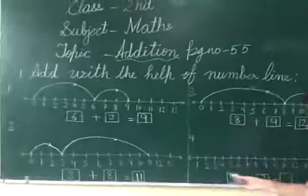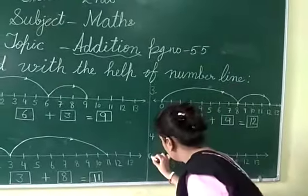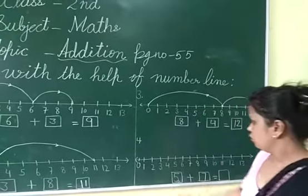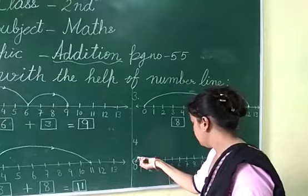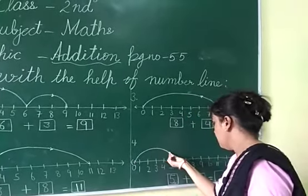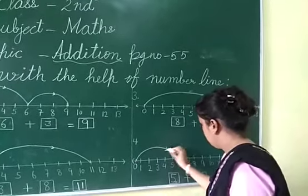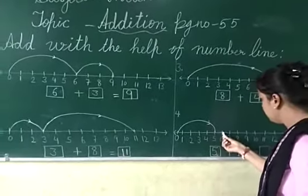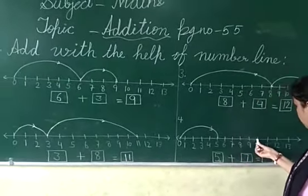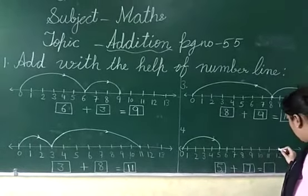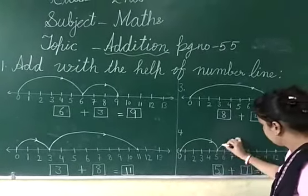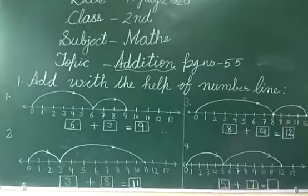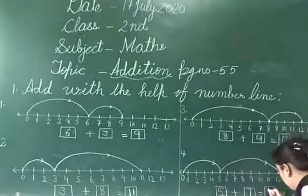This is 5 plus 7. From zero we will jump to 5. Then we add 7 more. Count 1, 2, 3, 4, 5, then 6, 7. We make 5 jumps, then 7 jumps. 5 plus 7 is 12.